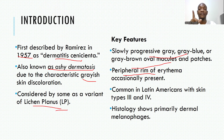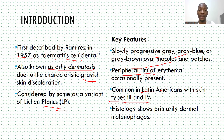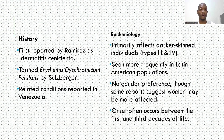This condition is more common in Latin Americans who have skin types three, four, and up to six. Histology primarily will show dermal melanophages — that's what we see on histology. Ramirez described it as dermatitis cinereata, and then it was termed erythema dyschromicum perstans by Salzberg.